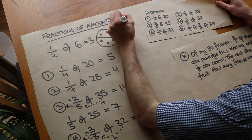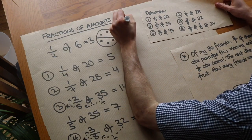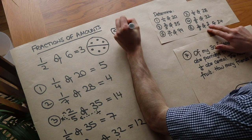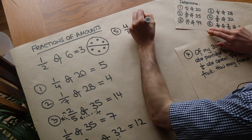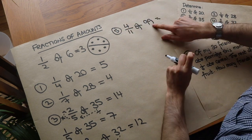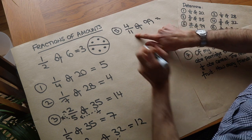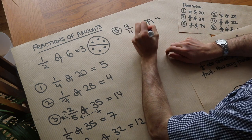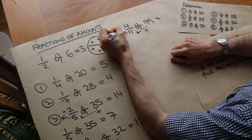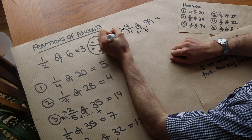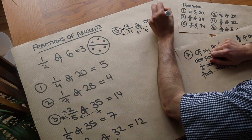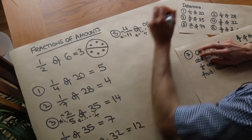Let's do a few more. Four elevenths of 99: we divide 99 by 11, which is 9, and then multiply that 9 by 4. 9 multiplied by 4 is 36.